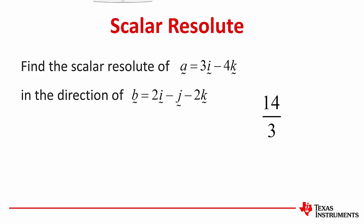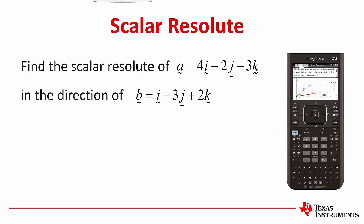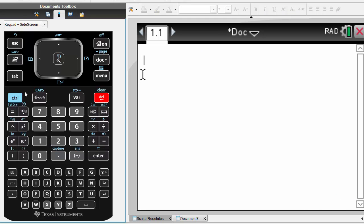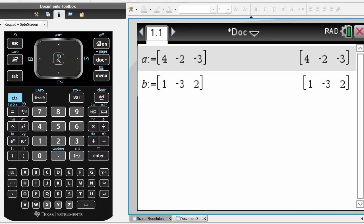Let's have a look at how we could do that on a calculator. We'll try a slightly different example but the same ideas. Using a calculator application, we'll start by assigning our vectors using matrix notation. Now, the vector we were given was 4i minus 2j minus 3k. The second vector we were given was 1i minus 3j and 2k.